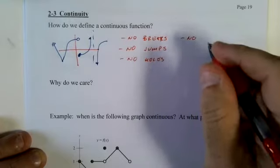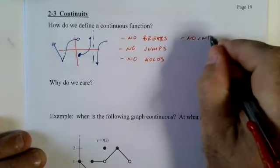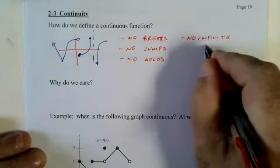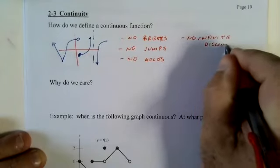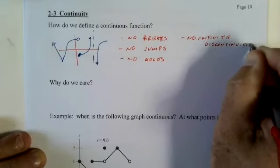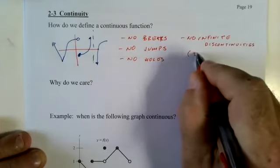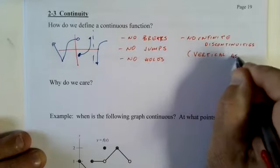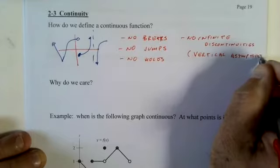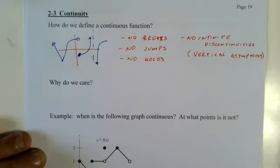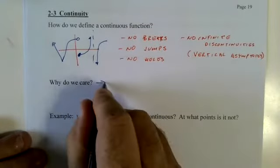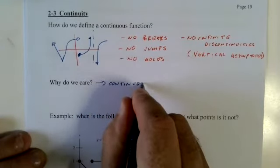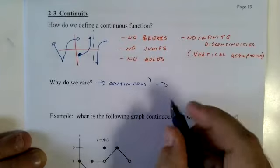No infinite discontinuities, i.e., vertical asymptotes. Hey, weren't we just working on those? It's like we're in the same unit. Why do we care? If it's continuous, then we can do calculus.